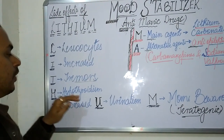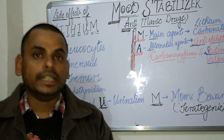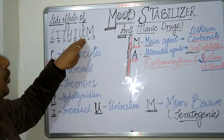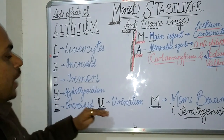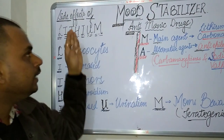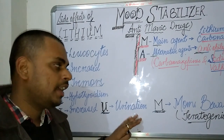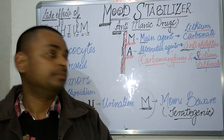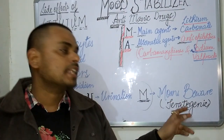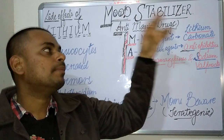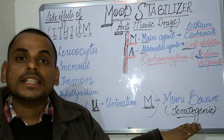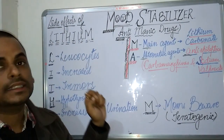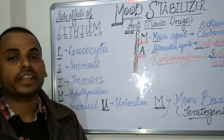The H of lithium refers to hypothyroidism — patients on lithium therapy can manifest hypothyroidism. The I and U together refer to increased urination — patients on lithium drugs can experience increased frequency of urination. The last M refers to moms — young women should be aware that lithium drugs cause teratogenic effects which can affect the fetus.